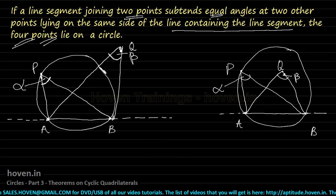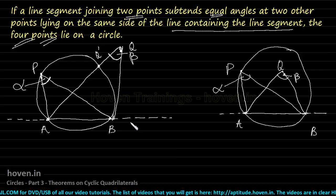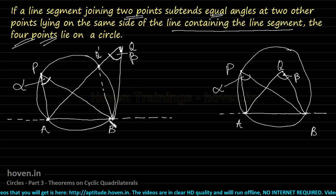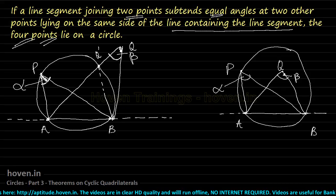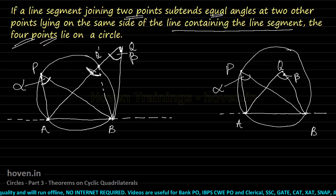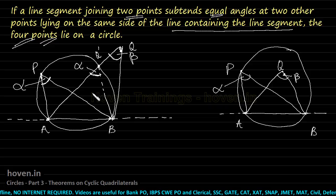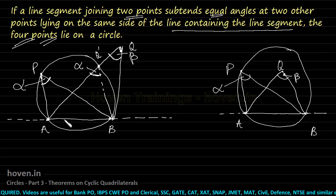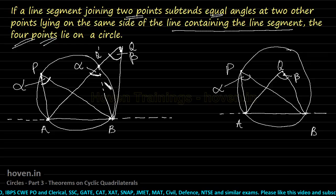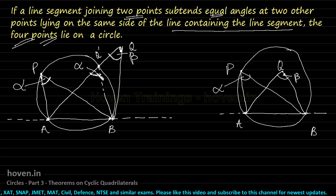Let this point outside the circle be marked Q'. Joining Q' to B, since P and Q' both lie on the same circle and AB is their chord, by the theorem that angles in the same segment are equal, the angle at Q' must also equal alpha.